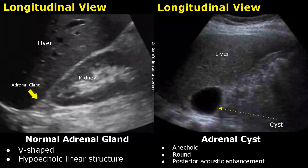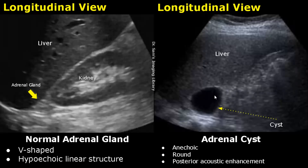The first case is an adrenal cyst. It is an anechoic round structure. A right adrenal cyst will be seen between the liver and the right kidney.